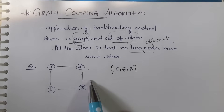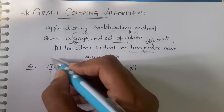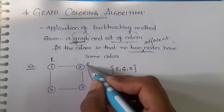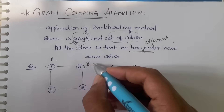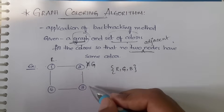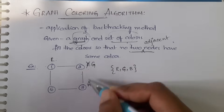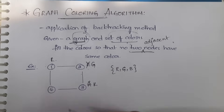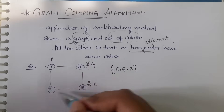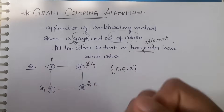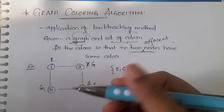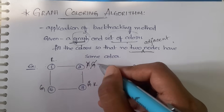You have to color the graph so that no two adjacent nodes have the same color. For example, if you color node 1 with red, you cannot color node 2 with red again because they are adjacent — you can color node 2 with green. Coming to node 3, you cannot use green again since it is adjacent, so you use red. Diagonals can be the same color, but adjacent nodes cannot.